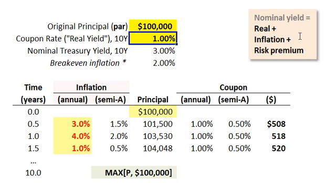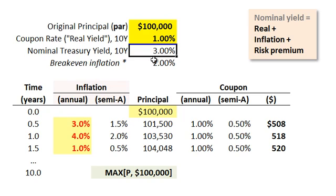The nominal yield — which is typically what we really mean when we say yield — has three components: a real yield, plus an inflation component, plus a risk premium, because we're uncertain about what's going to happen with inflation. The Treasury yield on a 10-year in nominal terms is currently pretty close to 3%. To compute what's sometimes called break-even inflation, we take that nominal yield of 3% and subtract the real yield — the fixed coupon rate on the Treasury inflation-protected securities — giving us a difference of 2%. That's called the break-even inflation, approximately what the market is predicting for inflation.